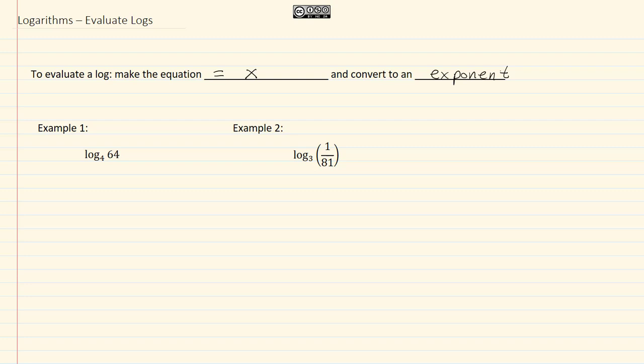Let's take a look at example one. We have log base four of sixty-four, so we're going to make that equal to x. Now we're going to write it as an exponent, so we have four to the x equal to sixty-four. Now we want to have the same basis, so let's break that down into prime factorization.